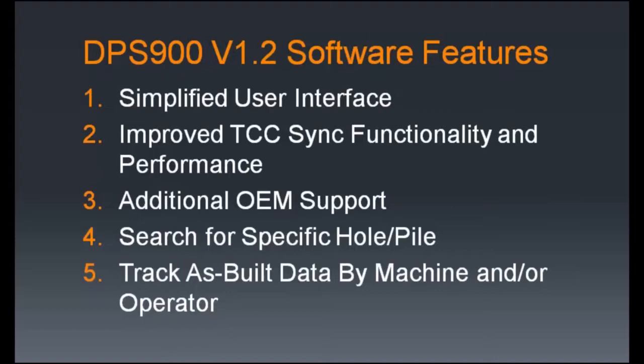Number five is tracking as-built data by machine and/or operator. Now every time you do a drill hole or pile, it's going to save the operator and machine that performed that hole or pile. That way, in the office you can filter results by who did a hole, what machine was used, and use those filters to track performance and compare operators as well as machines to each other.